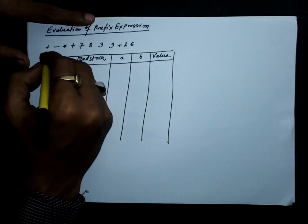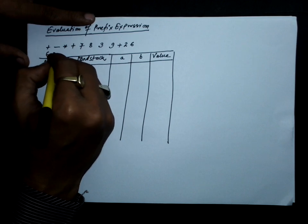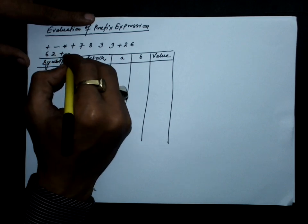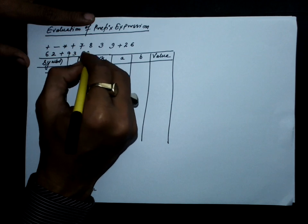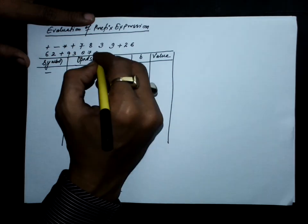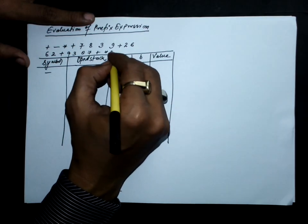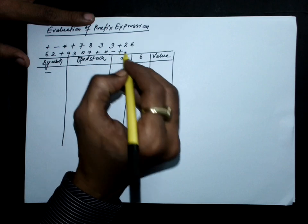Let's reverse this expression. After reversing, we get: 6, 2, plus, 9, 3, 8, 7, plus, multiplication, minus, and plus.